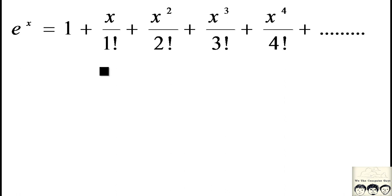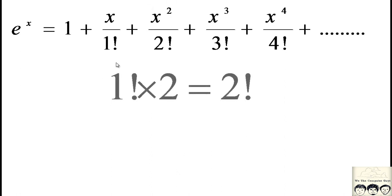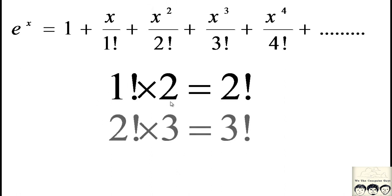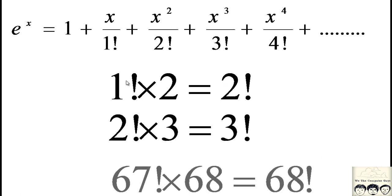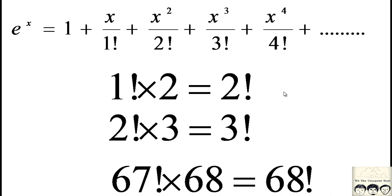Before showing the algorithm, there's one formula you need to understand. If you take any number's factorial and multiply it by the next number, you get the next factorial. So 1 factorial times 2 is 2 factorial, 2 factorial times 3 is 3 factorial. For example, 67 factorial multiplied by 68 gives 68 factorial. Keep this formula in mind because I will be using it in the algorithm.